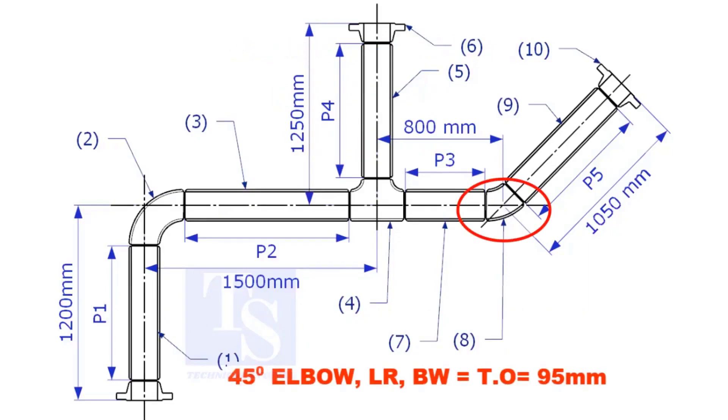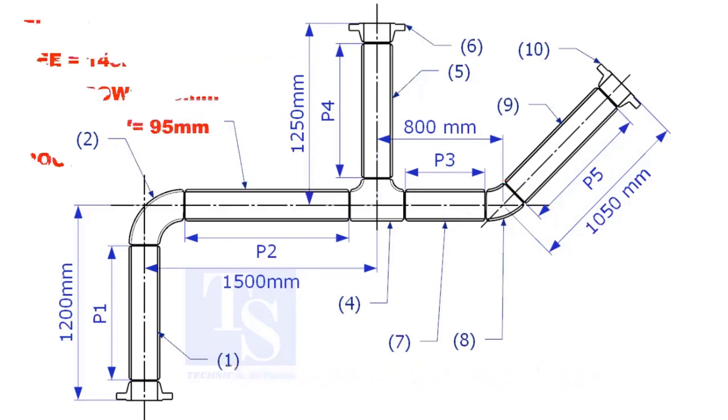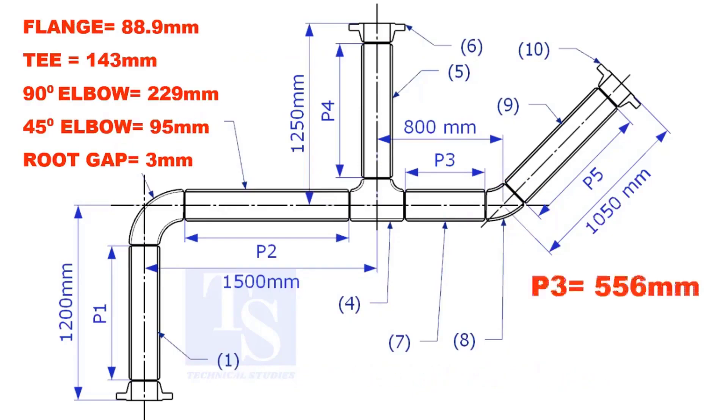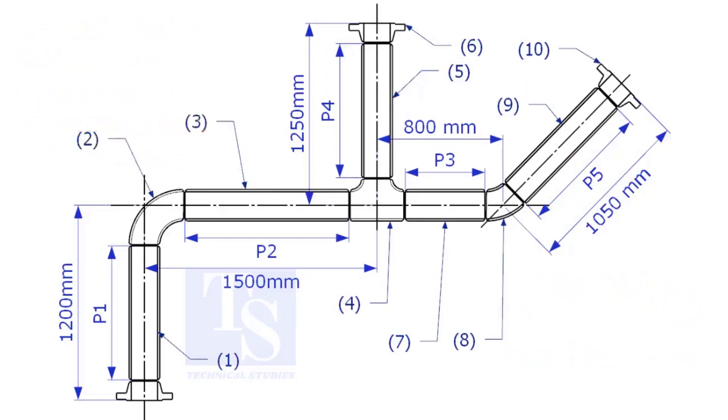Takeoff length of the 45 degree elbow is 95mm. The true lengths of pipes P3, P4, and P5 are given. You can cross check if the answers are correct or not. Please check the description for this sketch. Thank you for watching.